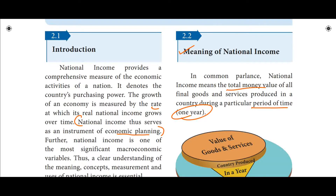Accounts and financial positions are measured over one year basically. One country's total money value of final goods and services produced — final goods are those that are ready to consume, ready to sell to the consumer. If you have the money value of those final goods and services, that is the national income.